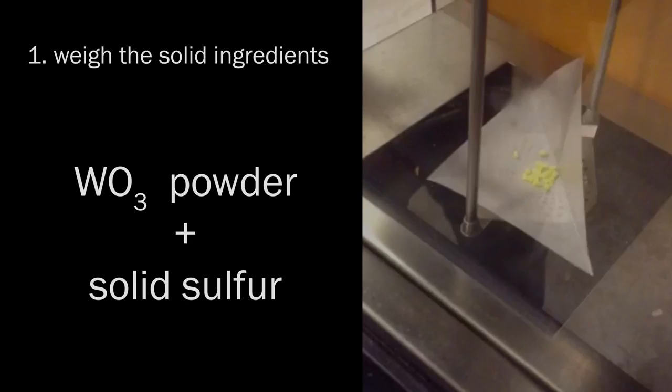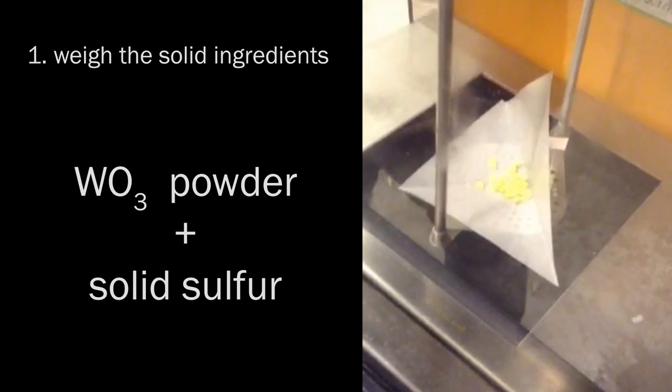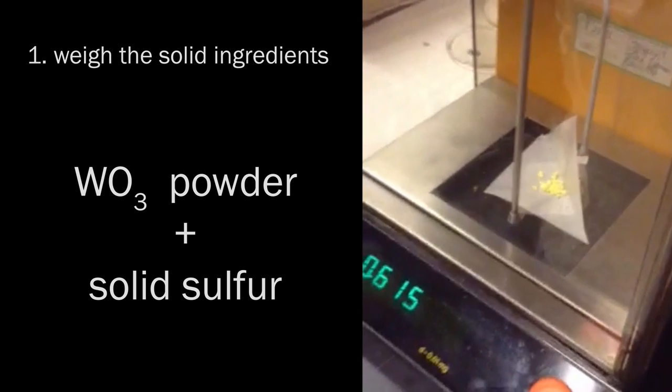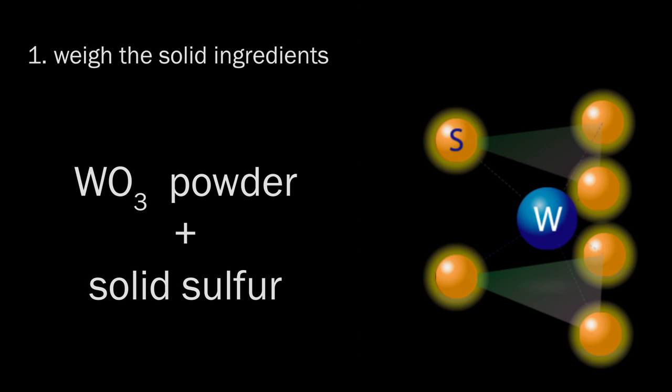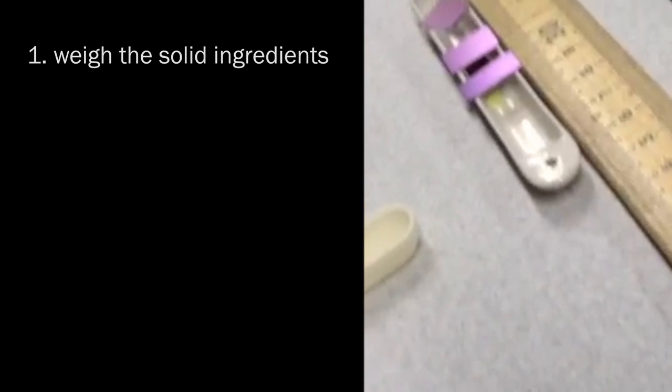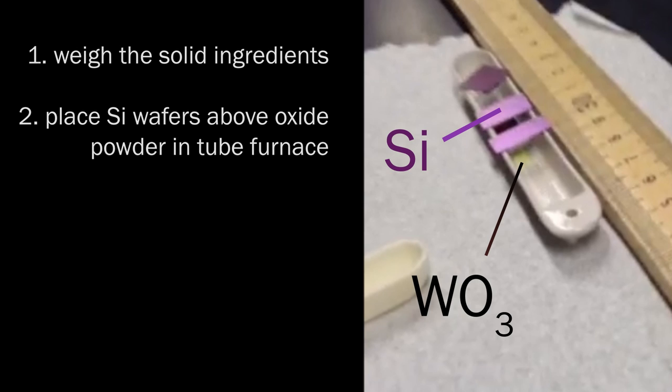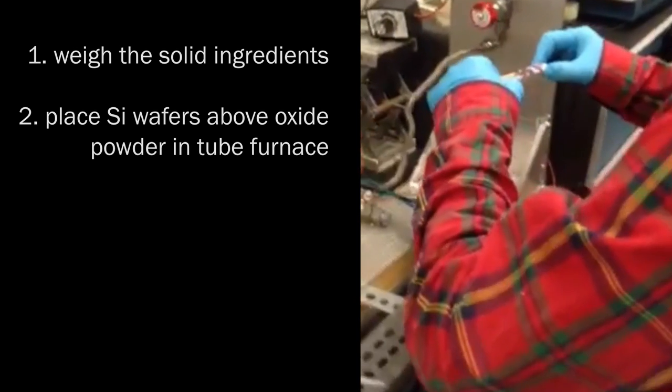First, he weighs the solid ingredients. Solid tungsten trioxide powder will provide us with the central metal atom, while solid sulfur provides us with the chalcogen atoms. He then places the silicon wafers upside down above the oxide powder and loads them into a tube furnace.